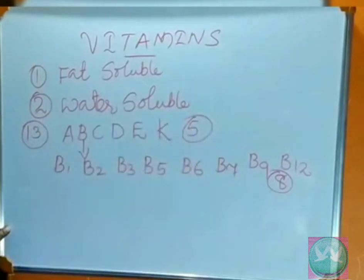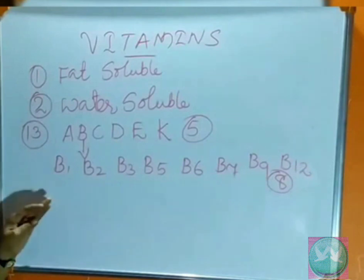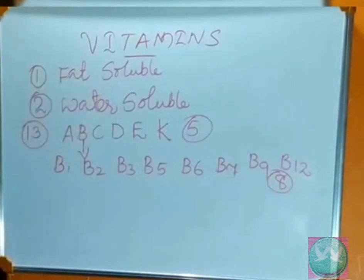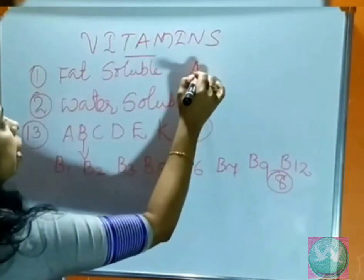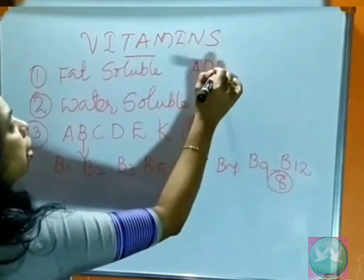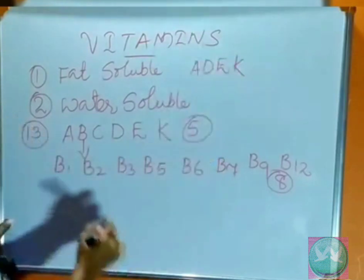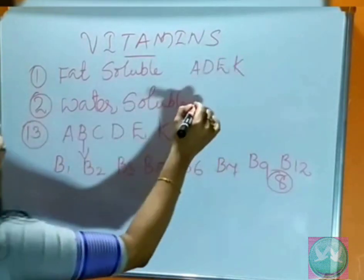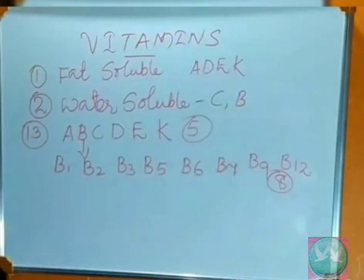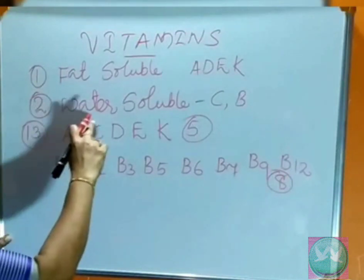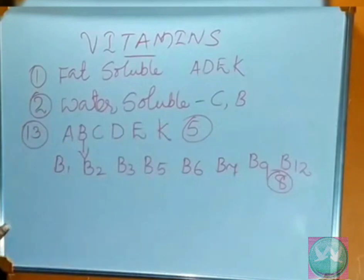So total 13 vitamins are there. Now we can check what are the fat soluble vitamins. Fat soluble vitamins are vitamin A, D, E, and K. Water soluble vitamins are vitamin C and B. Sometimes your mother tells you that you should not wash vegetables after cutting, because there is a chance of losing nutrients from those vegetables.